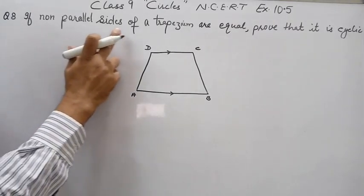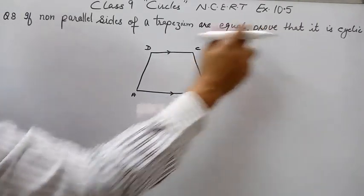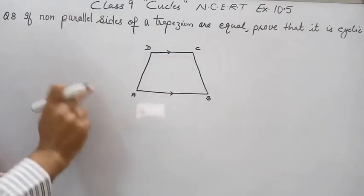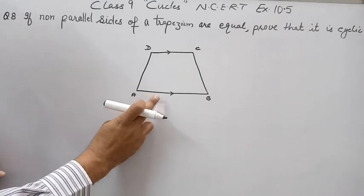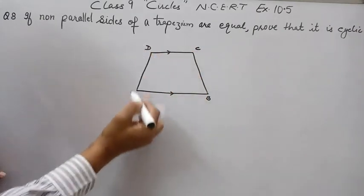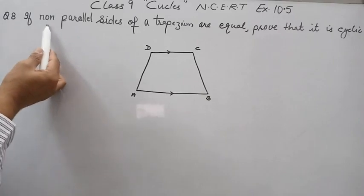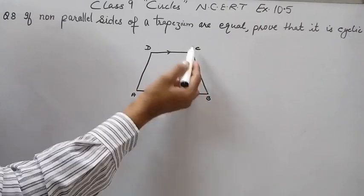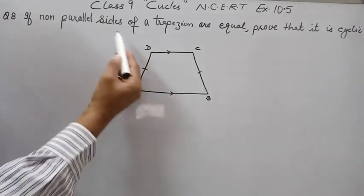If non-parallel sides of a trapezium are equal, prove that it is cyclic. First of all, we should know what a trapezium is. A trapezium is a quadrilateral in which one pair of opposite sides is parallel. So ABCD is a trapezium where AB is parallel to CD, and the non-parallel sides AD and BC are given as equal.